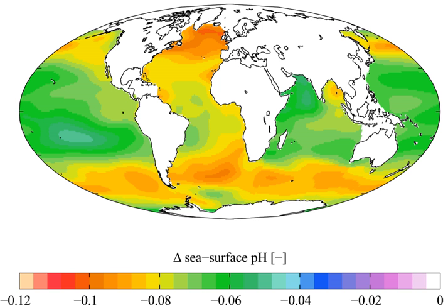Thomas Lovejoy, former chief biodiversity advisor to the World Bank, has suggested that the acidity of the oceans will more than double in the next 40 years. He says this rate is 100 times faster than any changes in ocean acidity in the last 20 million years, making it unlikely that marine life can somehow adapt to the changes.